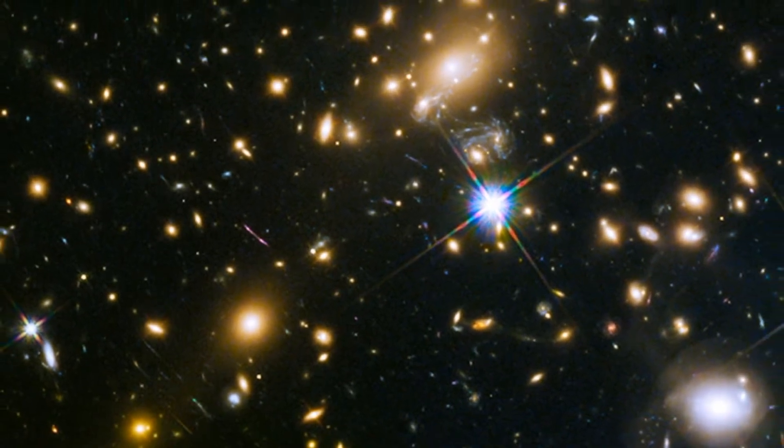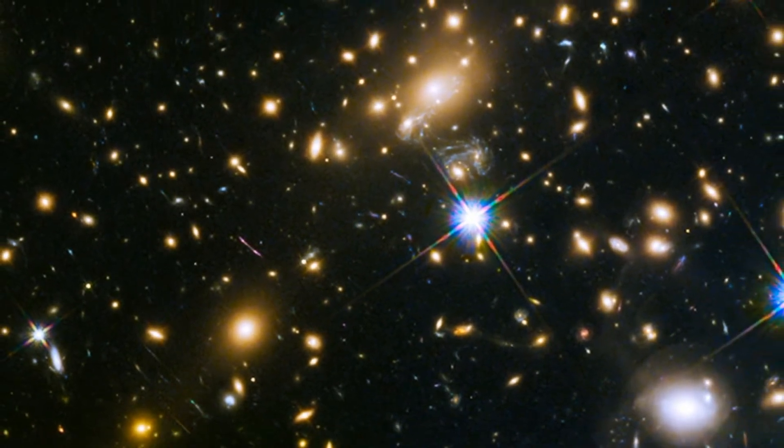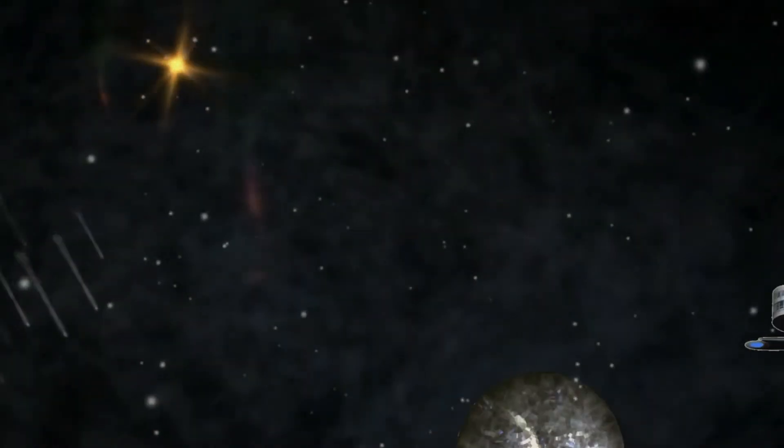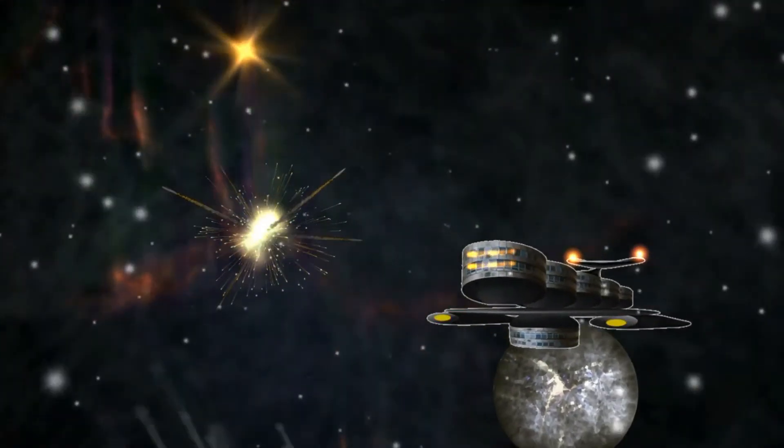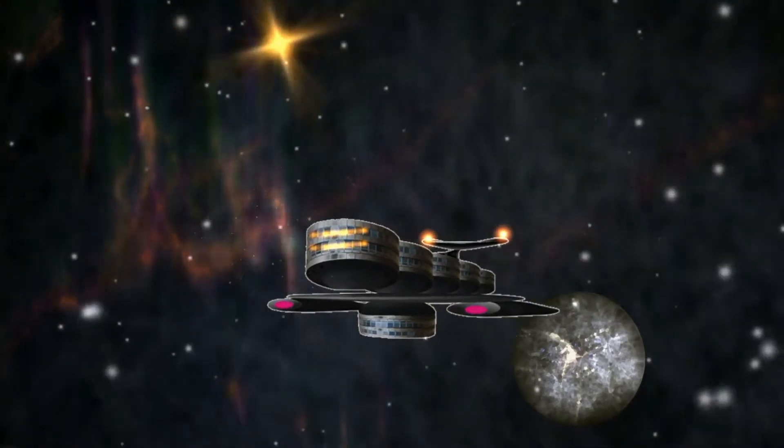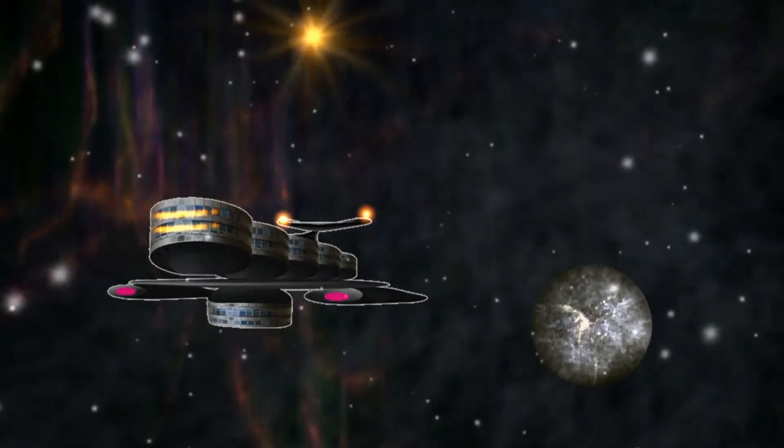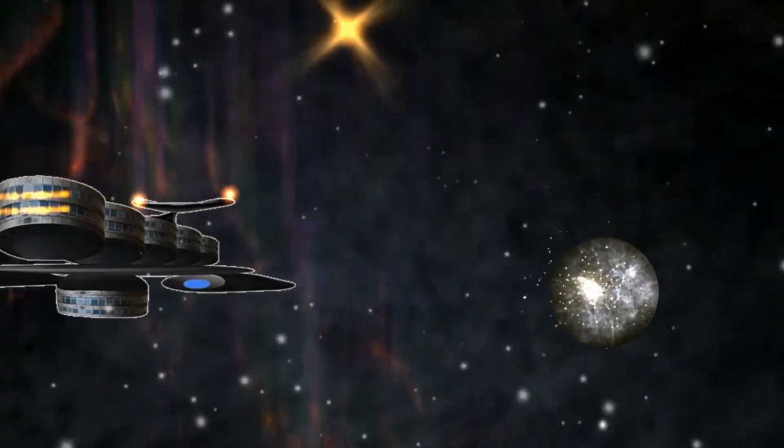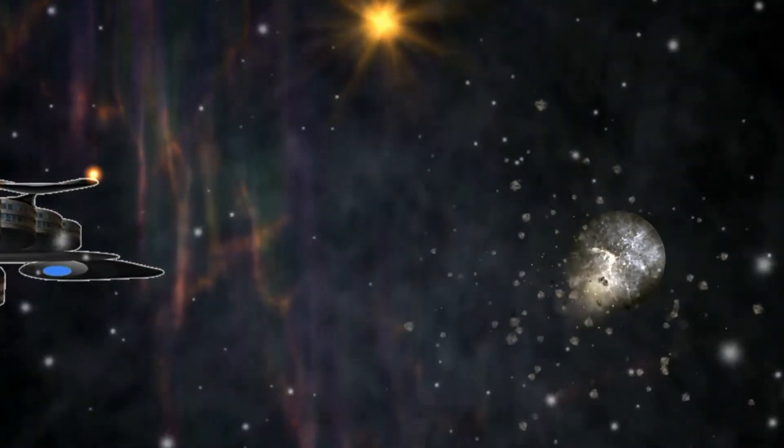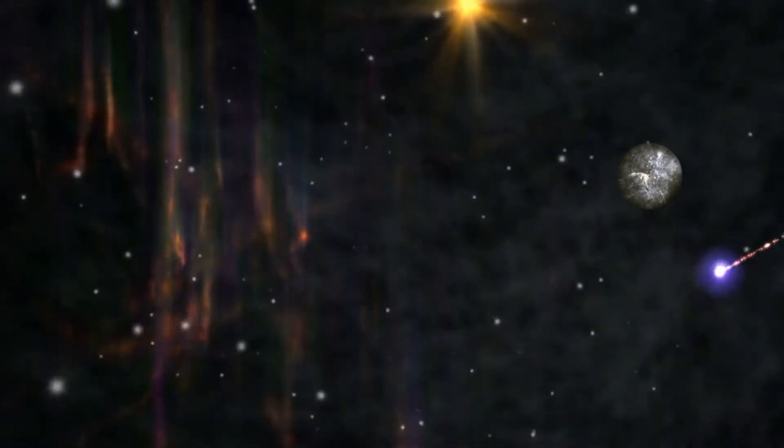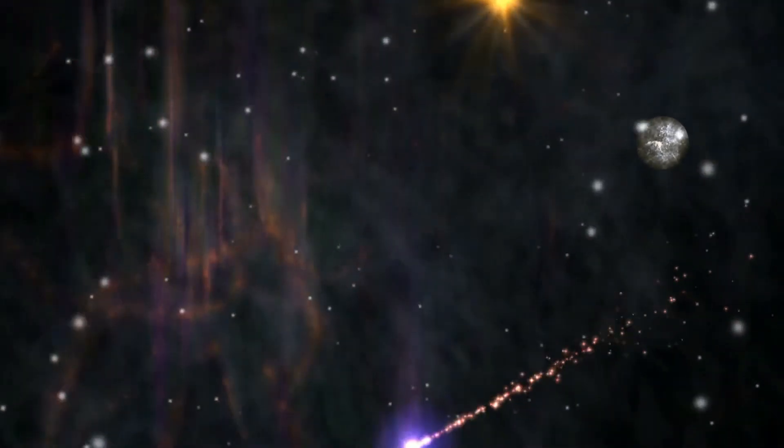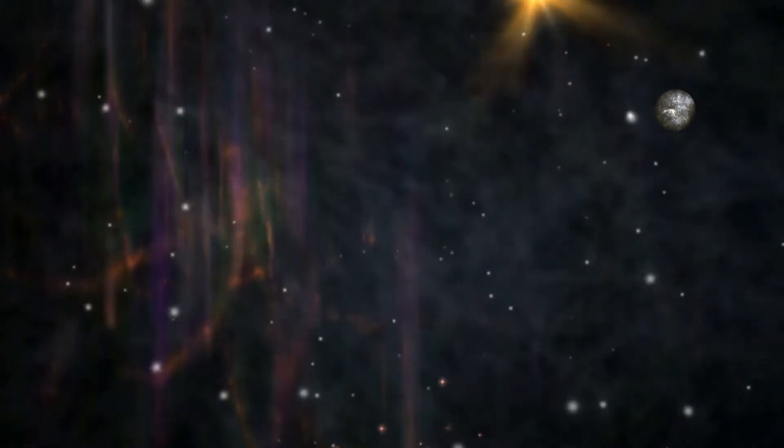The team behind the find say the light was emitted from the star dubbed Icarus, but officially named MACS J1149+2223 Lensed Star 1, when it was more than 9 billion light years from Earth. Icarus is now much further away but will have died, forming either a black hole or a neutron star.